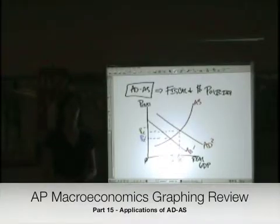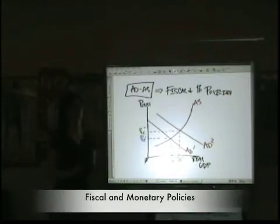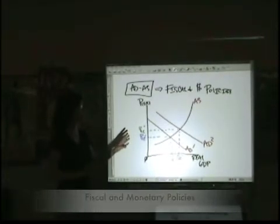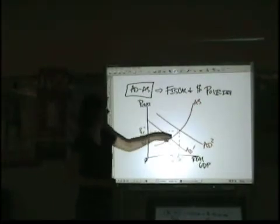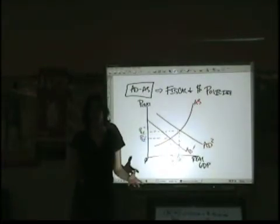You may see a multiple-choice question or two with some curves asking you what would the government need to do to shift aggregate demand from the first curve to the second curve, for example.